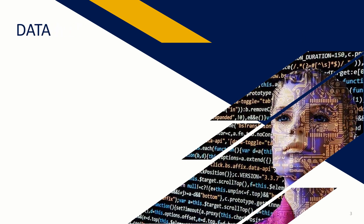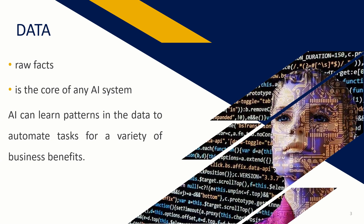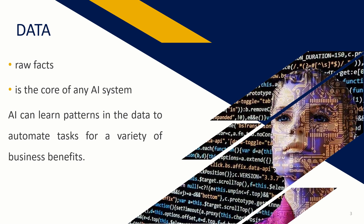The first domain is Data. Data is all around us — it is nothing but raw facts and needs to be processed to get meaningful information. It is the core of any AI system. Artificial Intelligence can learn patterns in the data to automate tasks for a variety of business benefits. For example, Amazon uses predictive analysis to get information on what customers are actually looking for to grow their business.